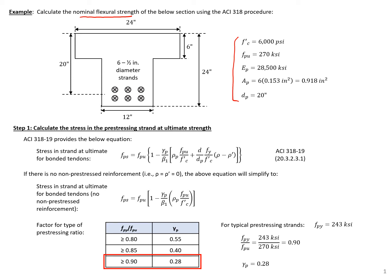Our first step is to calculate the stress in the prestressing strands at ultimate strength. We have this equation given in the code, which simplifies down if we don't have any non-prestress reinforcement. So if we don't have any non-prestress reinforcement, we can knock off some terms and we'll get the simplified equation shown here.